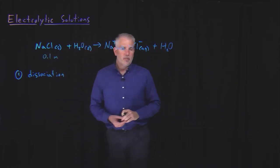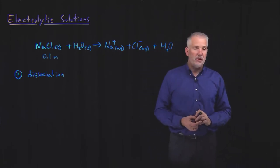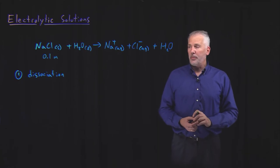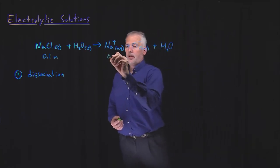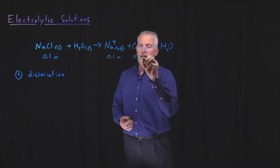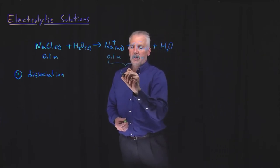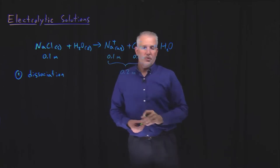For example, if I make a 0.1 molal solution of sodium chloride, if I dissolve 0.1 moles of sodium chloride in a kilogram of water, I'll end up with a solution that's 0.1 molal in sodium ions and 0.1 molal in chloride ions. Altogether, that concentration will be 0.2 molal.